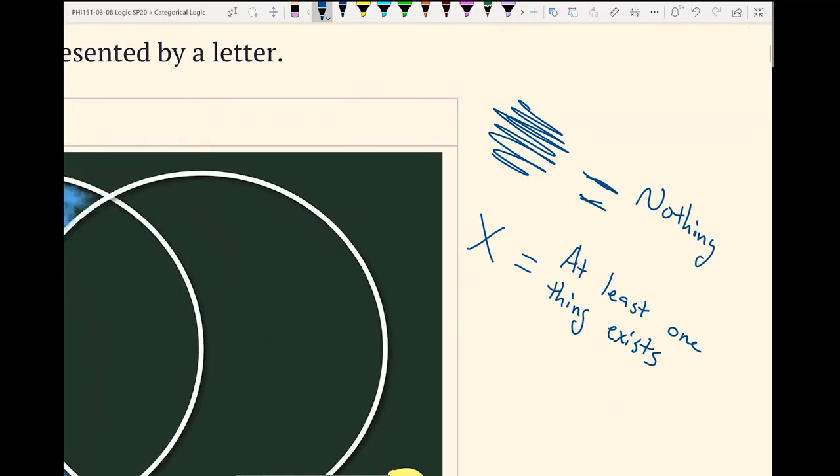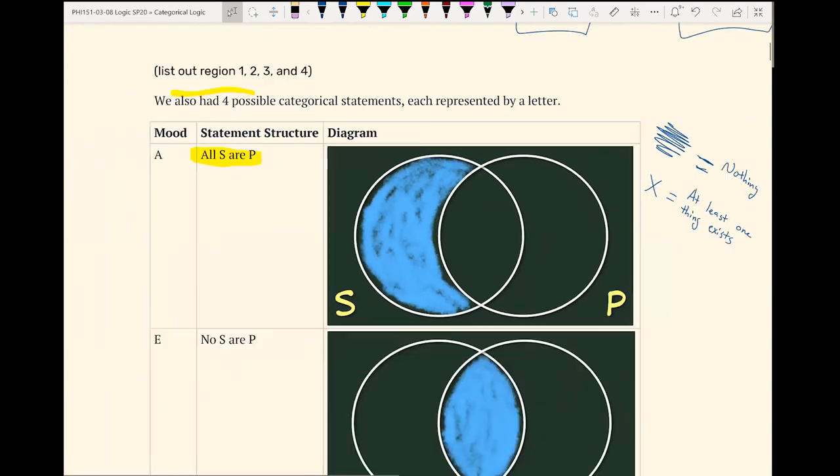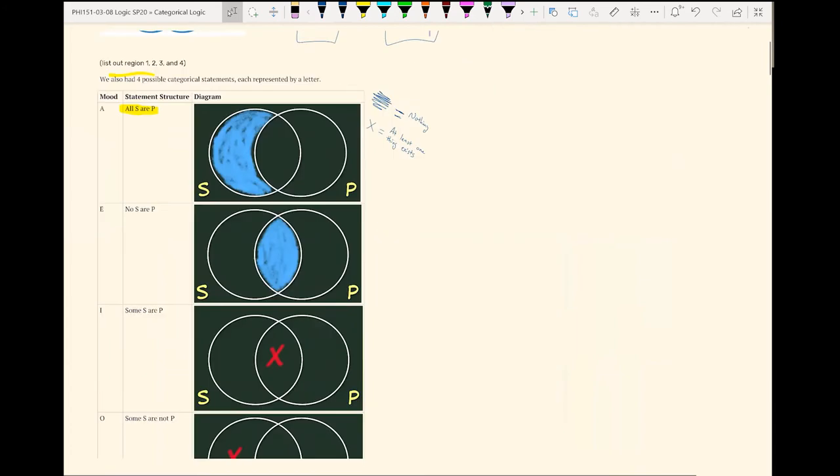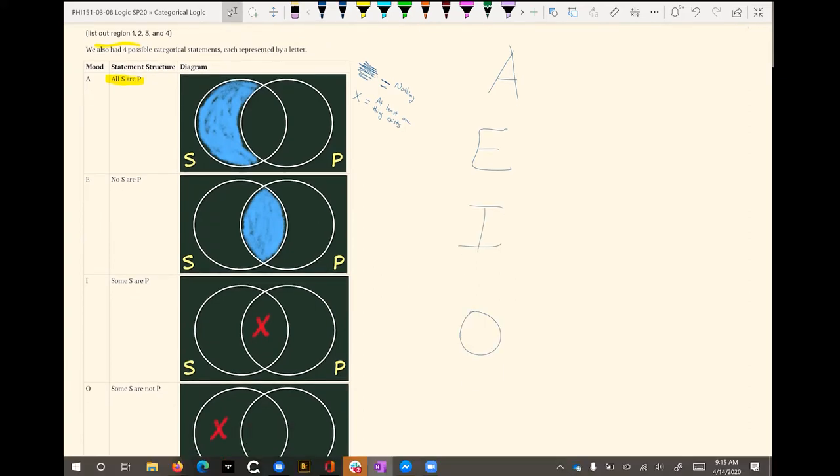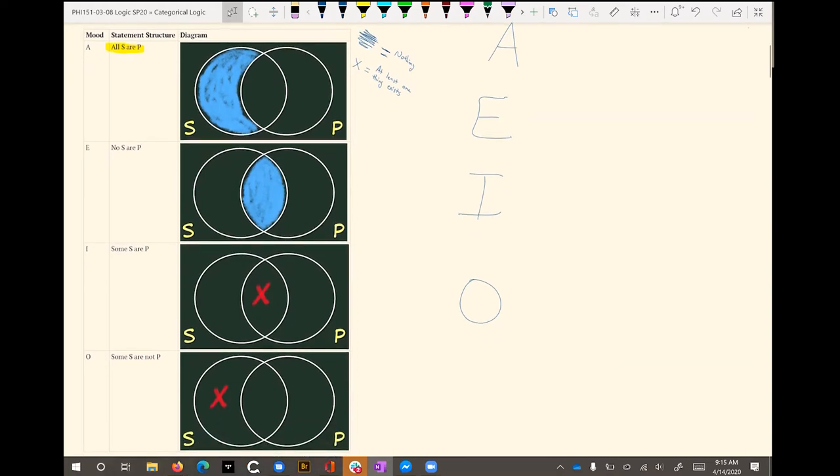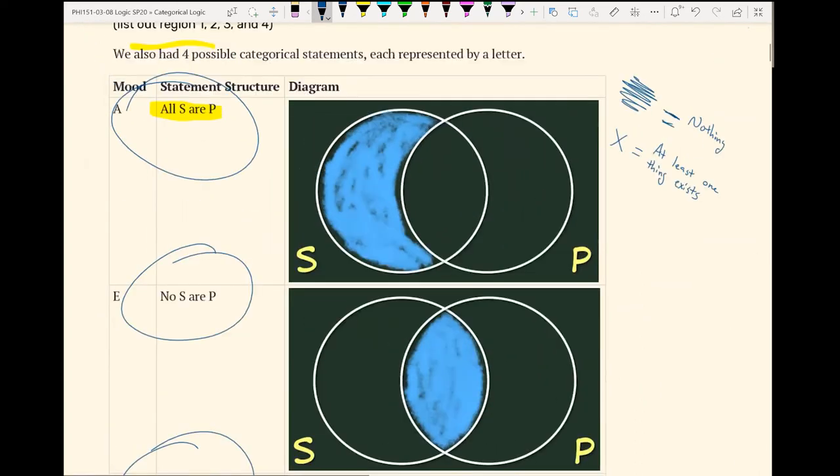Now, this is stuff you should be aware of from prior units, but if not, this is just the catch up. We're going to go over the moods really quickly. If you remember, we had four moods: A, E, I, and O. And just for shorthand, here's how you diagram each statement. You'll want to have these things memorized so that you can do the syllogism diagrams quickly, or really any of these diagrams quickly. So let's just walk through them one by one quickly.